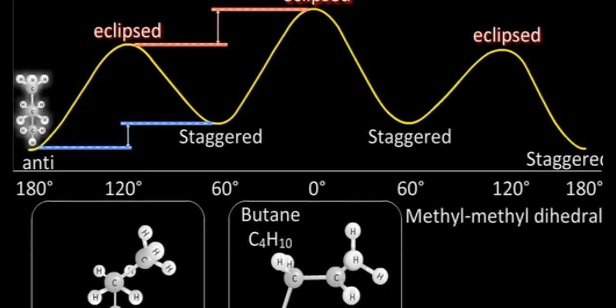On rotating the conformation by 60 degrees, we obtain the conformation known as eclipsed conformation. In this conformation, the methyl groups are closer to one another, and thus it has higher energy than staggered conformation.